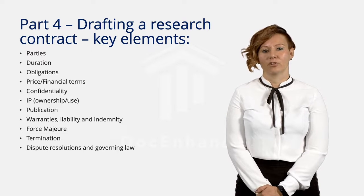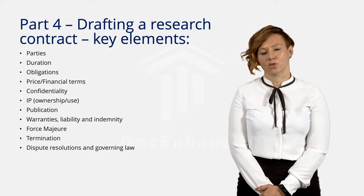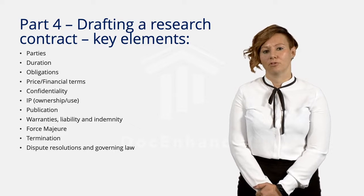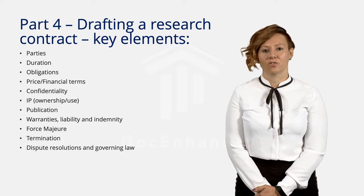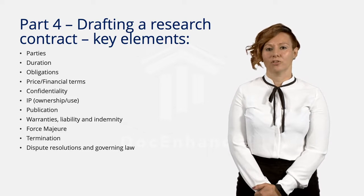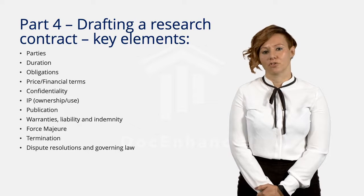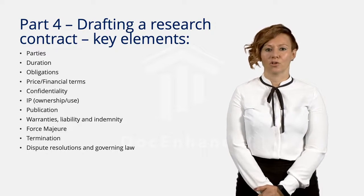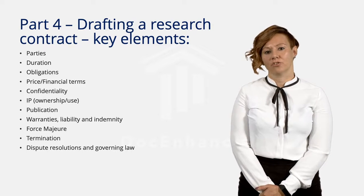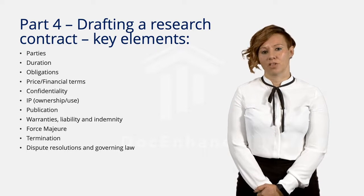A party's ability to claim relief for a force majeure event therefore depends upon the terms of the contract, and in particular the force majeure provision. Force majeure terms are considered as express terms and will not ordinarily be implied into contracts governed by English law. In the absence of an express force majeure clause in an English law contract, parties may be able to rely upon the more limited doctrine of frustration. The threshold for proving frustration is a lot higher than force majeure, and you should therefore consider having a force majeure clause in all research contracts. The doctrine of frustration will not be used by the English courts if the contract contains a force majeure provision, since the court will regard this as an agreed allocation of risk between the parties.